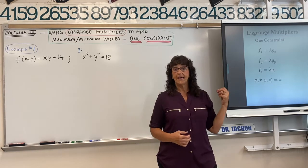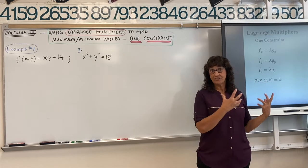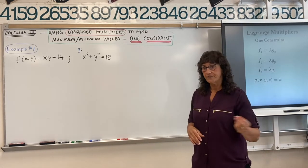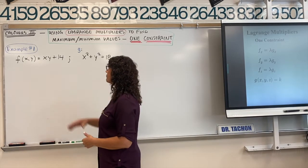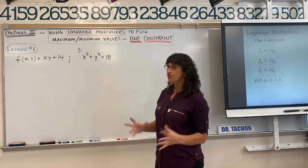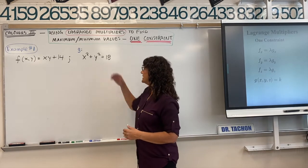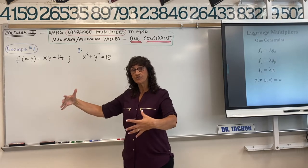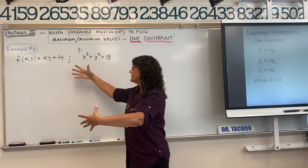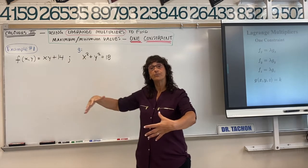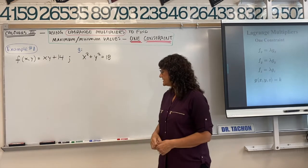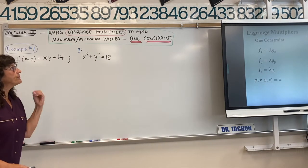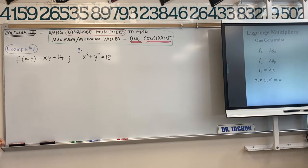Let's look at Example 1. Our surface is going to be x times y plus 14, and our constraint is x squared plus y squared equals 18. We want to find the highest and lowest points — maximum and minimum values — within our constraint. We'll utilize our Lagrange multiplier to set up a system so we can find our critical points.